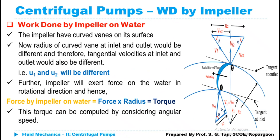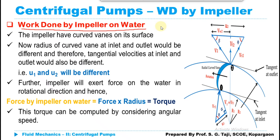Now let's move to the computation of work done by an impeller on the water. Work done per second is force multiplied by velocity. This is similar to the Francis turbine case, with the key difference that here the impeller is doing work on the water, whereas previously the water was doing work on the impeller by striking on the curved vanes and exerting force on them.